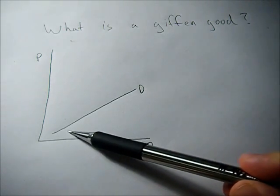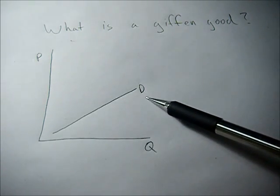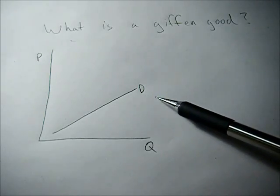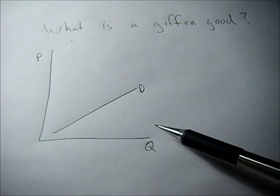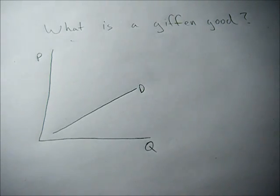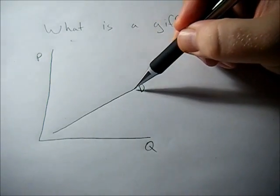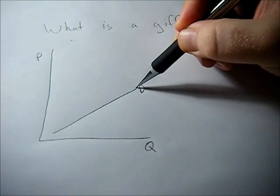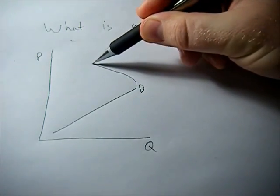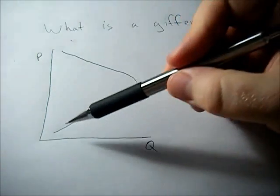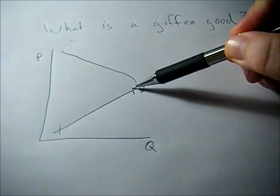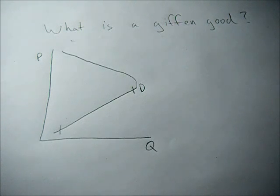So basically a Giffen Good results in an upward sloping demand curve which violates our law of demand which says that demand has to be downward sloping. The curious thing about Giffen Goods is that the demand curve isn't always upward sloping. At some point it has to be downward sloping as well. So a good can be a Giffen Good over a range of the demand curve but not through the whole demand curve.